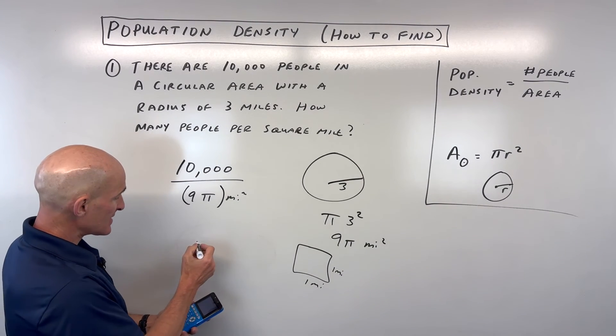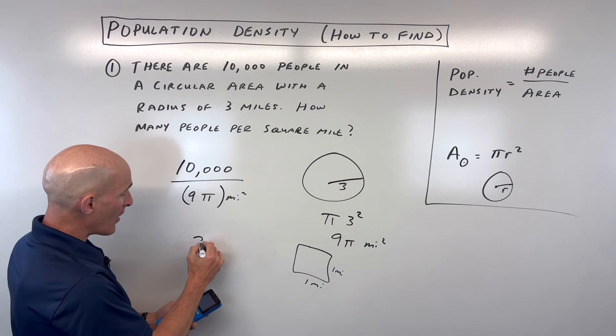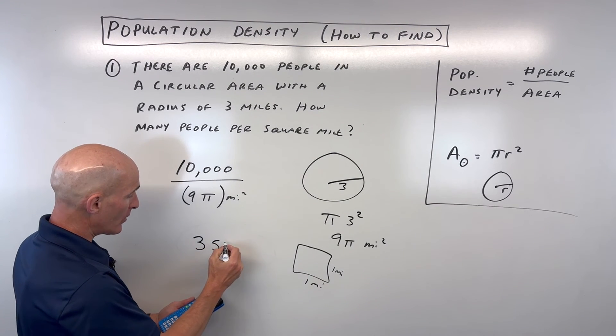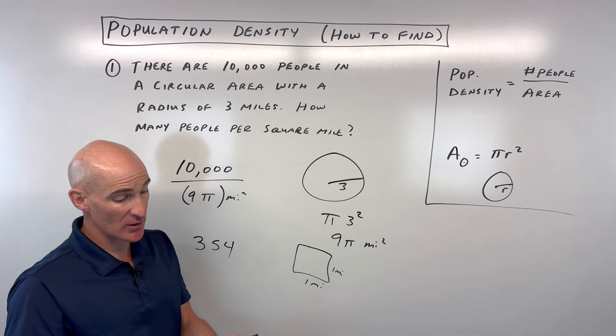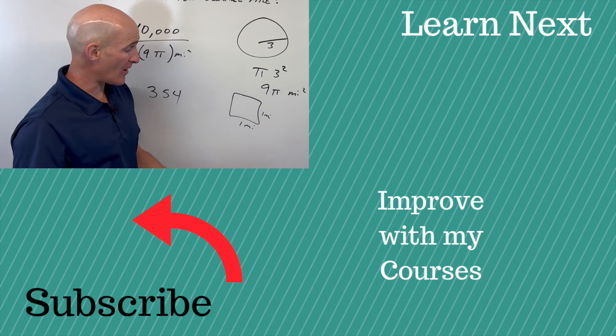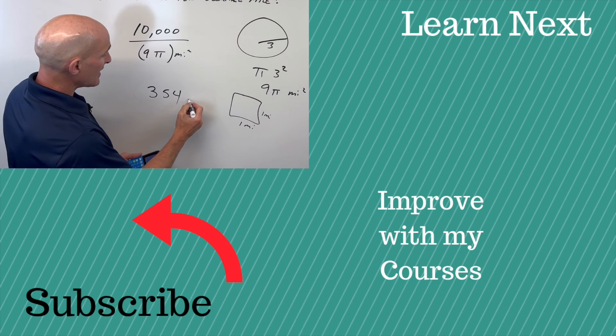So since it's 353.6, I'm going to round up to the next whole number here, which is 354. If it was 353.2, I'd round down to 353.